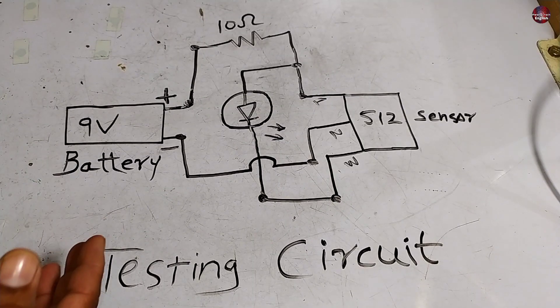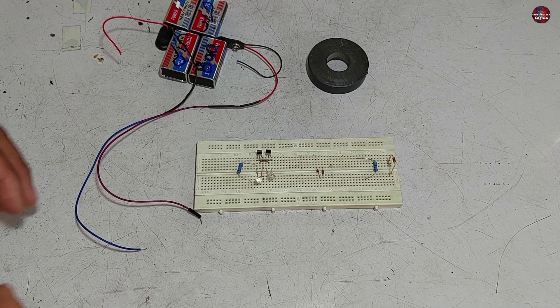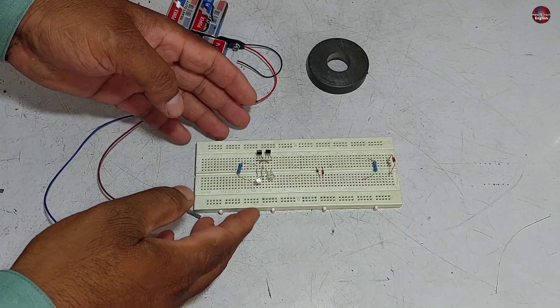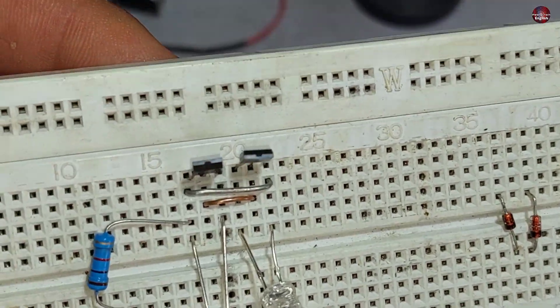This is the testing circuit of the hall sensor. You can pause the video and take a screenshot of it. Now with another example, we will understand the effect of the unipolar hall sensor, how they work.